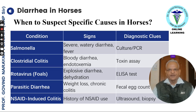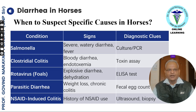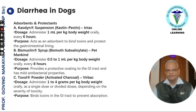When to suspect specific causes in horses: severe watery diarrhea — suspect Salmonella, go for culture and PCR. Clostridial colitis — there is bloody diarrhea and endotoxemia, look for toxin assay. Rotavirus — explosive diarrhea with dehydration. Parasitic diarrhea — weight loss and chronic colitis, go for fecal egg count. NSAID-induced colitis — there is a history of NSAID use, go for ultrasound and biopsy.